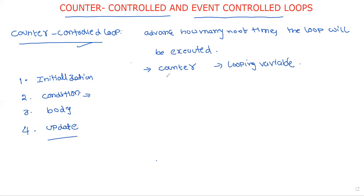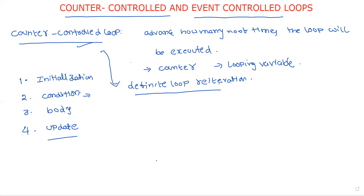The main important thing is we know how many number of times the loop is executed. The counter variable is either a constant or an integer variable assigned with some value. This counter-controlled loop is also called a definite loop reiteration — that is, we are clearly defining how many number of times we are repeating the loop.